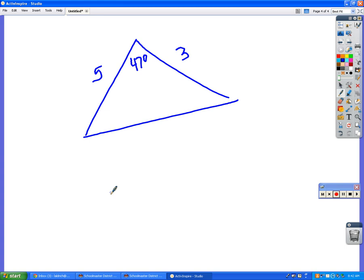So if you wanted to find the area of that triangle. Are you ready? Not yet. Probably not. The area is going to be one-half times five times three times the sine of forty-seven.